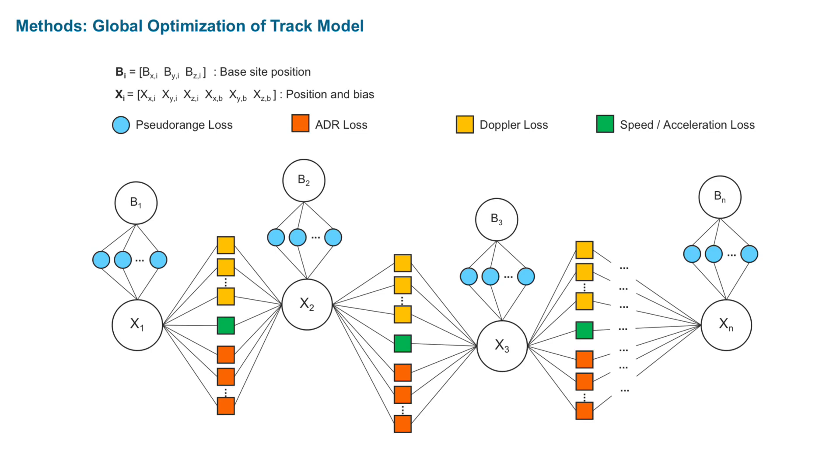In this slide, we can see how the losses are calculated. The x1, x2 to xn are the state variables, including position variables from track module and receiver's clock bias variables. As we can find, it is quite similar to the factor graph optimization method.